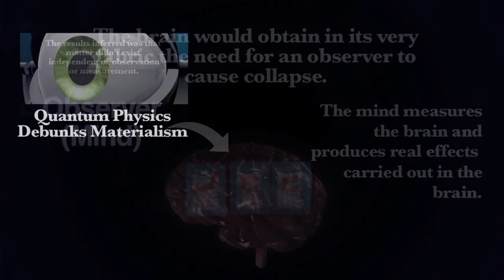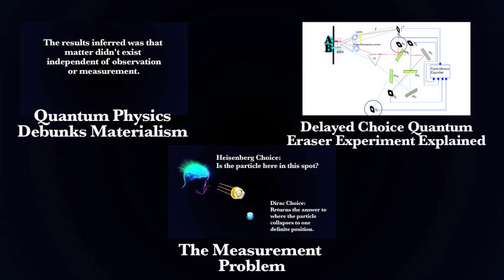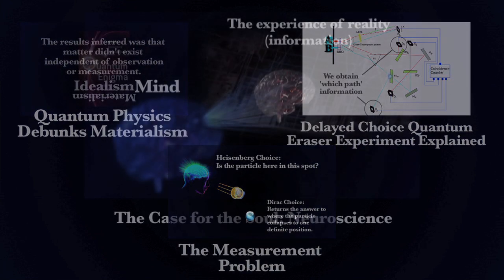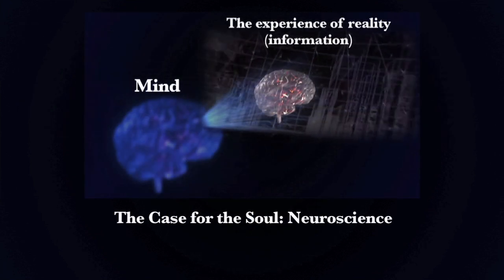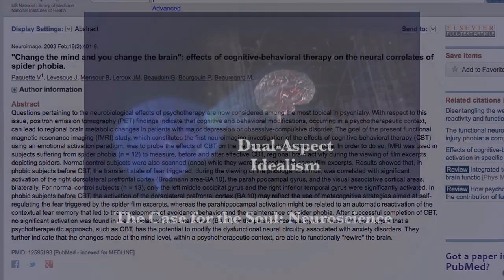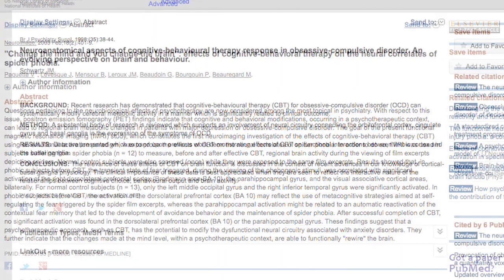The idealist implications of matter and the observer carry over to what we discussed in the previous videos. This experimental data correlates to exactly what we see in the neuroscientific research on mindful attention and the plasticity of the brain. The mind is able to produce real observable effects in the brain.